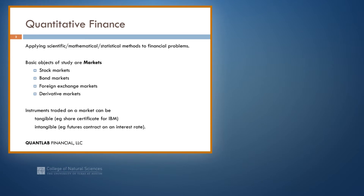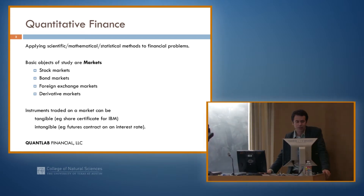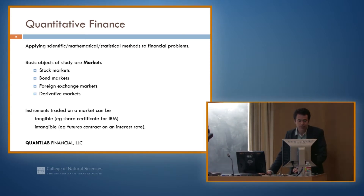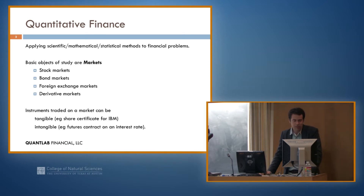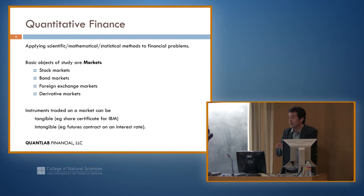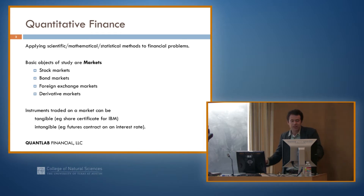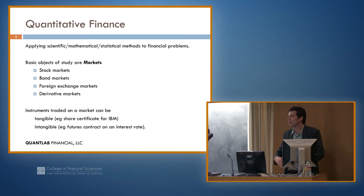The basic objects of study are markets. A market could be a stock market or a bond market, foreign exchange or derivatives — just anything you're trading makes a market. The things you trade could be actual things like pieces of paper, like stock certificates, or something very abstract and intangible, like a futures contract on an interest rate.